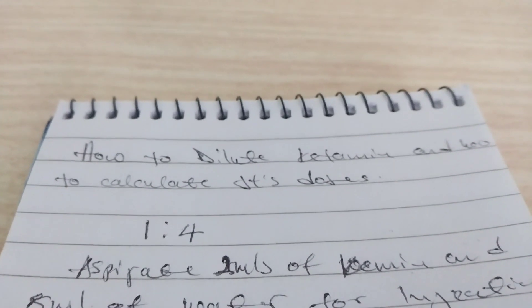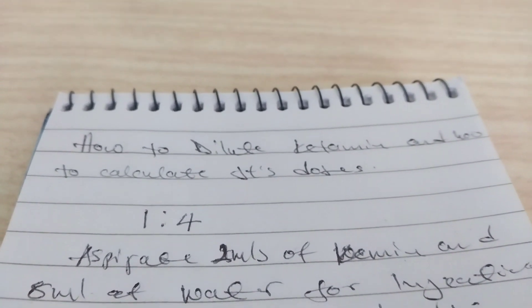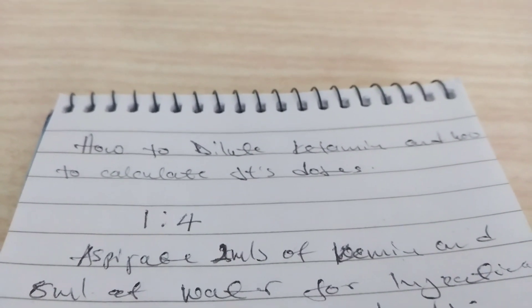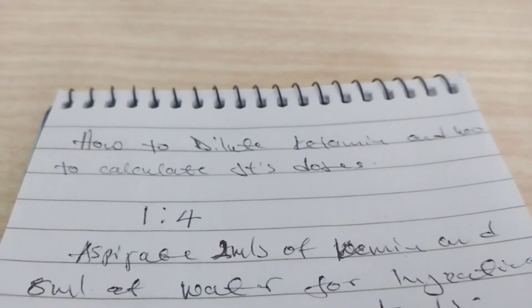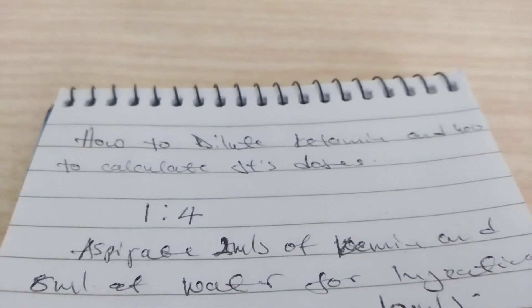As you can see, we use the ratio 1:4. That's 1ml of ketamine and 4ml of water for injection.